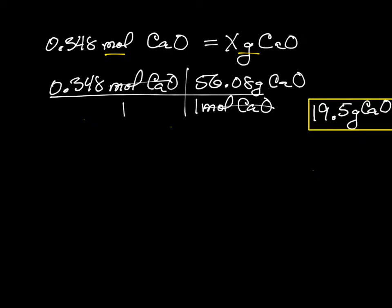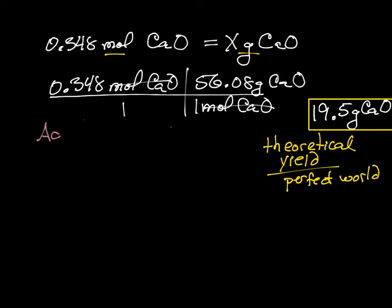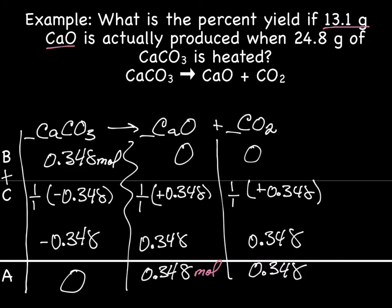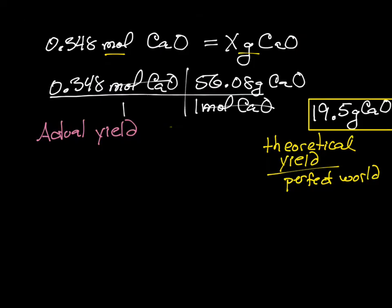Alright. So this number here that we just calculated, that is our theoretical yield. This is our, in a perfect world. Okay. If everything worked out perfectly in the lab, this is what we would have got. So the question is, what is our actual yield? What actually happened in the lab? Well, they tell us here that we actually produced 13.1 grams of CaO.